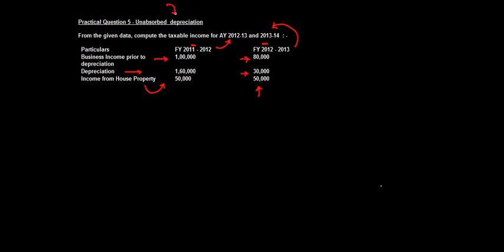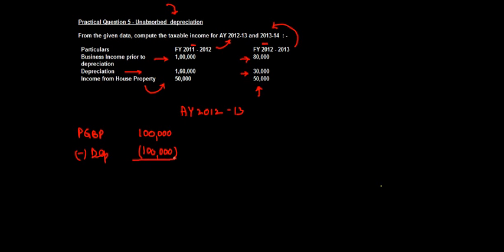This question is mainly about how to deal with unabsorbed depreciation. For assessment year 2012-13, profits and gains of business and profession is one lakh. We reduce depreciation of one lakh sixty thousand, but the maximum that can be absorbed here is one lakh. The balance sixty thousand can then be set off against income from house property.